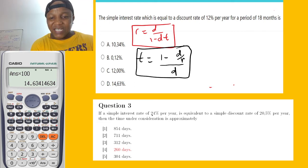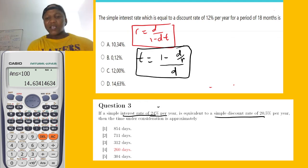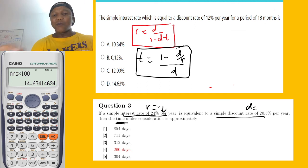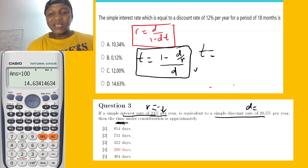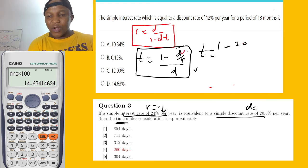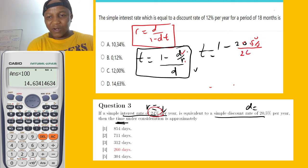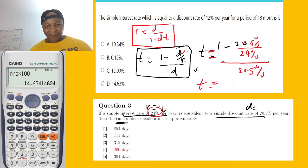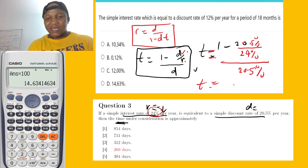Let's look at the second question. They give simple interest rate R, equivalent to the simple discount rate D. They give us D equal to 20.5% and R equal to 24%, and they want us to find the time T. Since we're looking for time, we use the second formula: T equal to 1 minus D times R over D. The time we get will be in years.